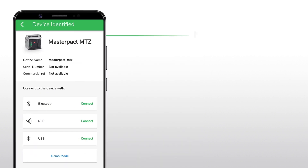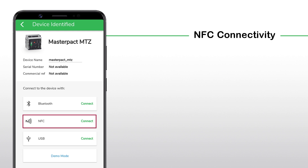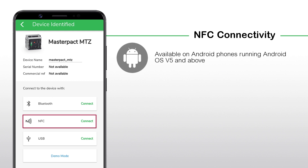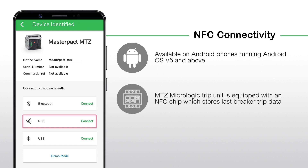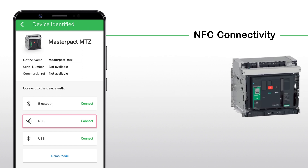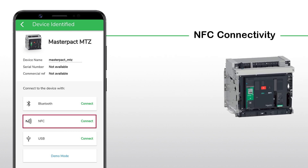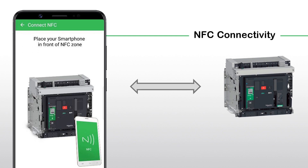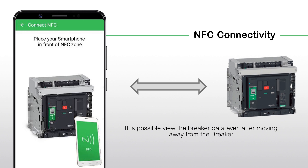The second communication mode uses NFC, which is only available on Android phones running Android OS version 5 and above. The MTZ Micrologic Trip Unit is equipped with an NFC chip which stores last breaker trip data, even when it is not powered on. After connecting the MasterPACT MTZ Breaker to the MasterPACT MTZ Smart App via NFC, it is possible to view the breaker data even after moving away from the breaker.